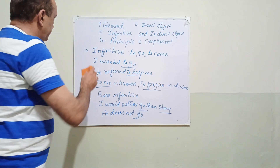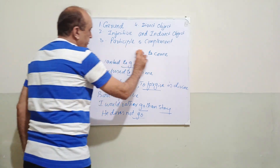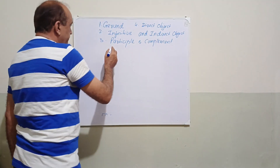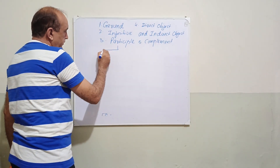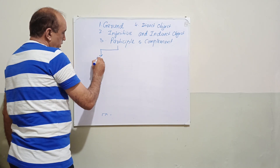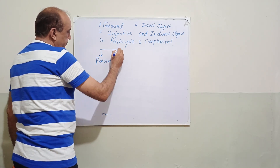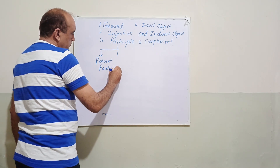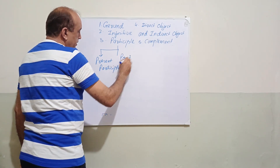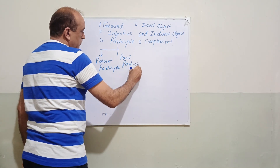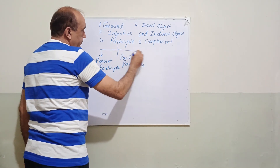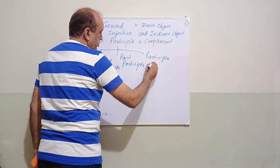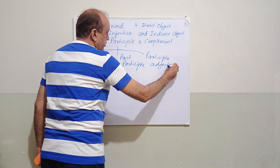Now we come to the third one — that is participle. The first kind is present participle. The second one is past participle. And the third one is participle adjective.